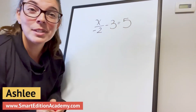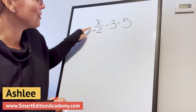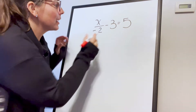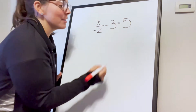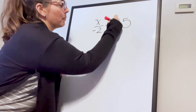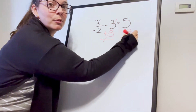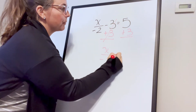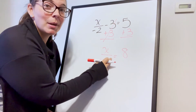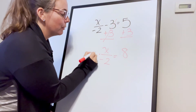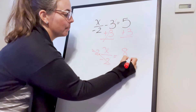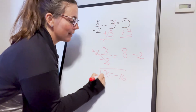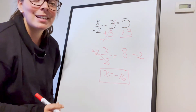Let's try a two-step equation: X divided by negative 2 minus 3 equals 5. The first step is to get rid of the minus 3 by adding 3 to both sides, giving X divided by negative 2 equals 8. Now to get rid of the negative 2, we multiply both sides by negative 2. We end up getting X equals negative 16.